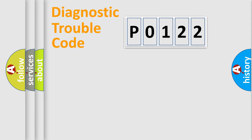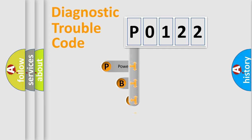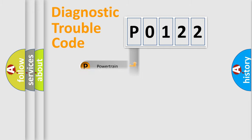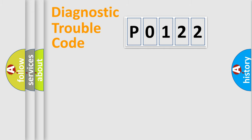Let's look at the history of diagnostic fault code composition according to the OBD2 protocol, which is unified for all automakers since 2000. We divide the electrical system of an automobile into four basic units: Powertrain, Body, Chassis, and Network. This distribution is defined in the first character of the code.